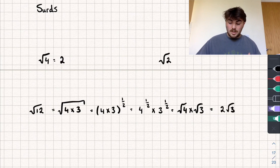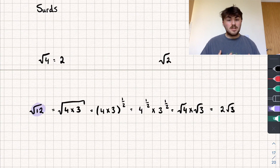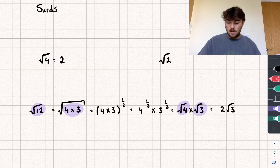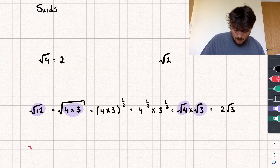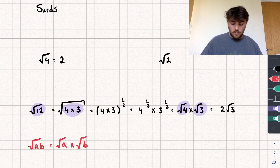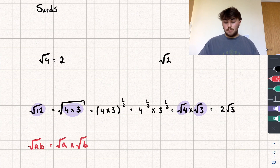The key thing to take away from this example is: if we have the square root of a number — say 12 — and we can represent that as two other numbers multiplied together — say 4 times 3 — then it equals the square root of one multiplied by the square root of the other. In the generic case, the square root of A times B equals the square root of A multiplied by the square root of B. This is the first rule, and probably the one you'll use most often.